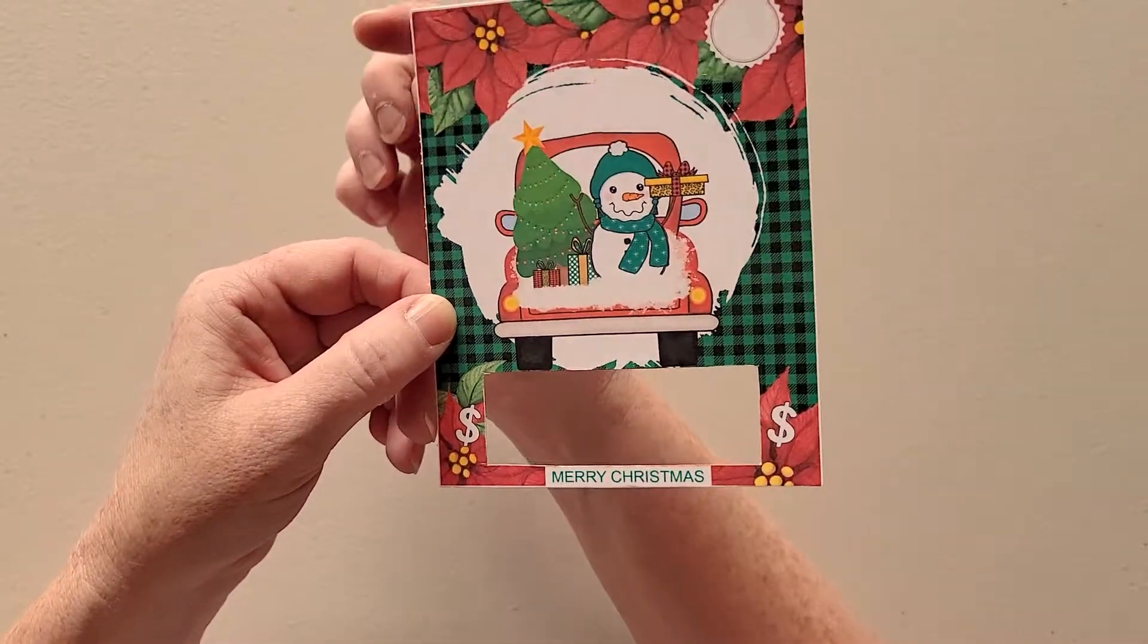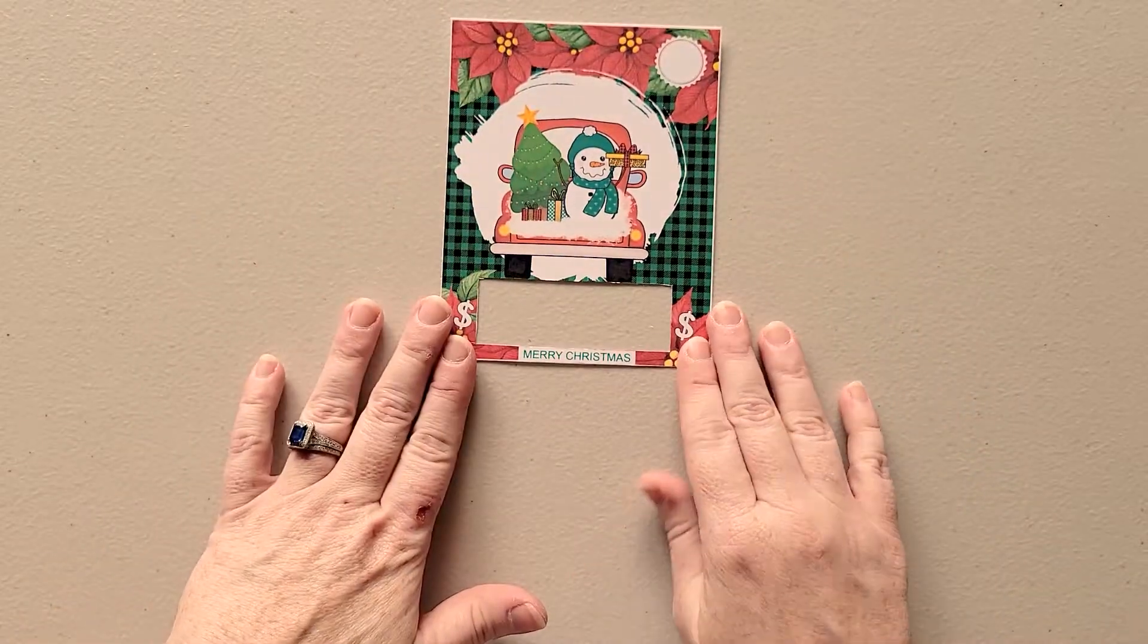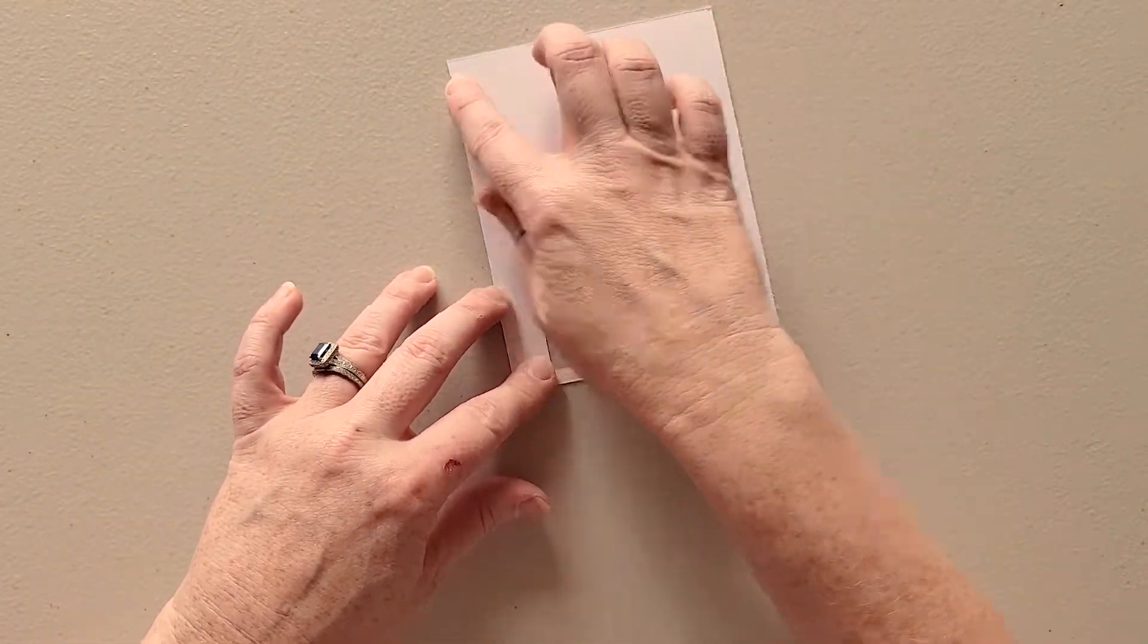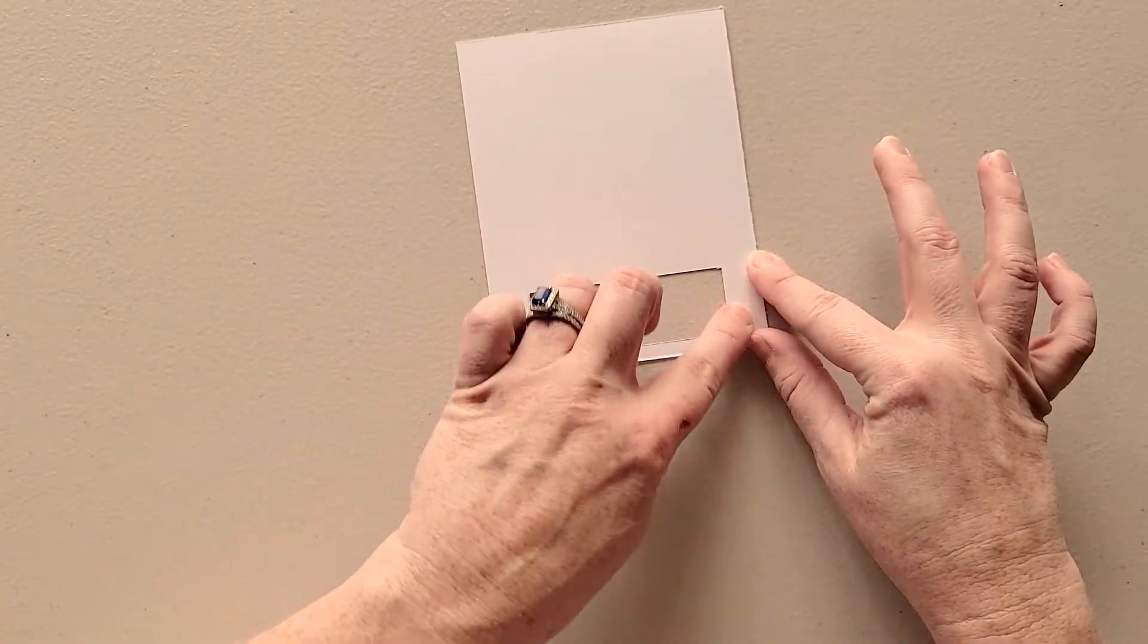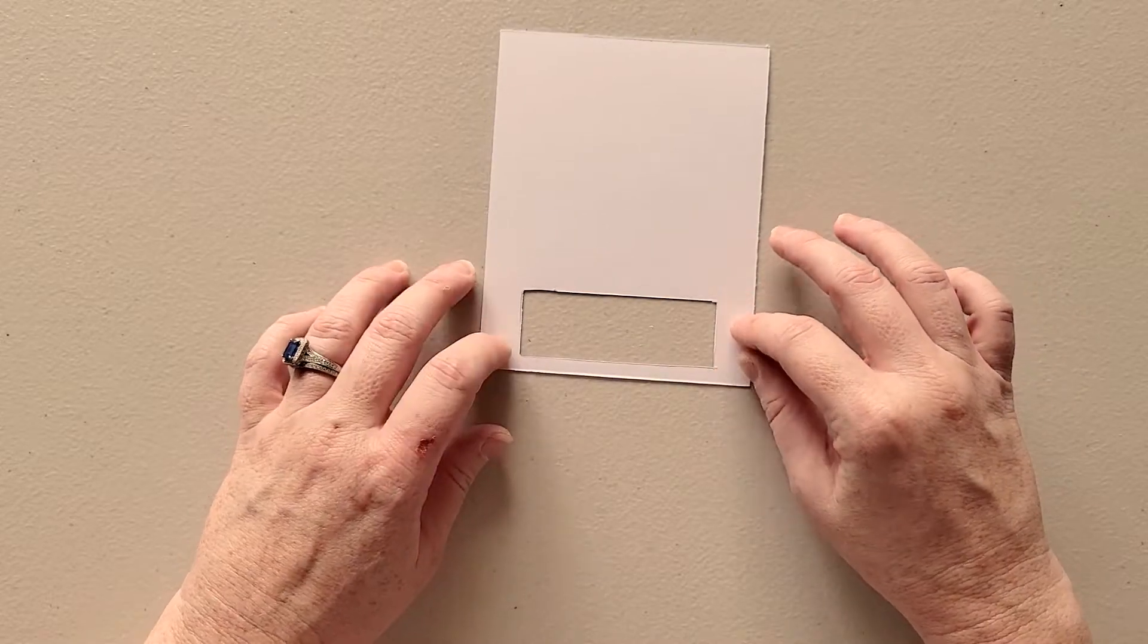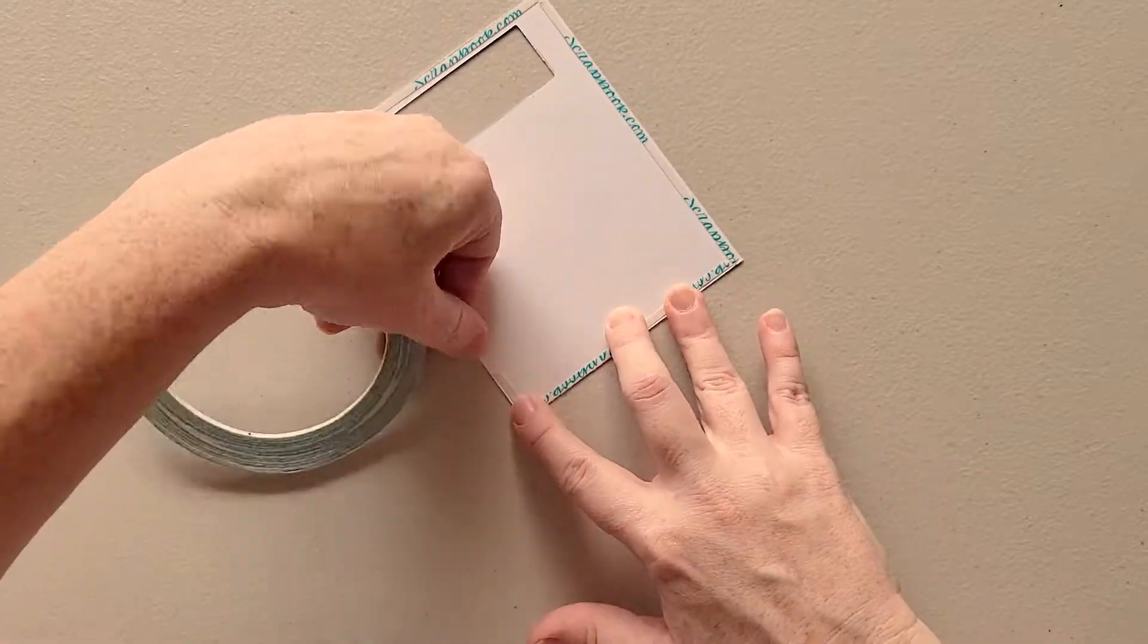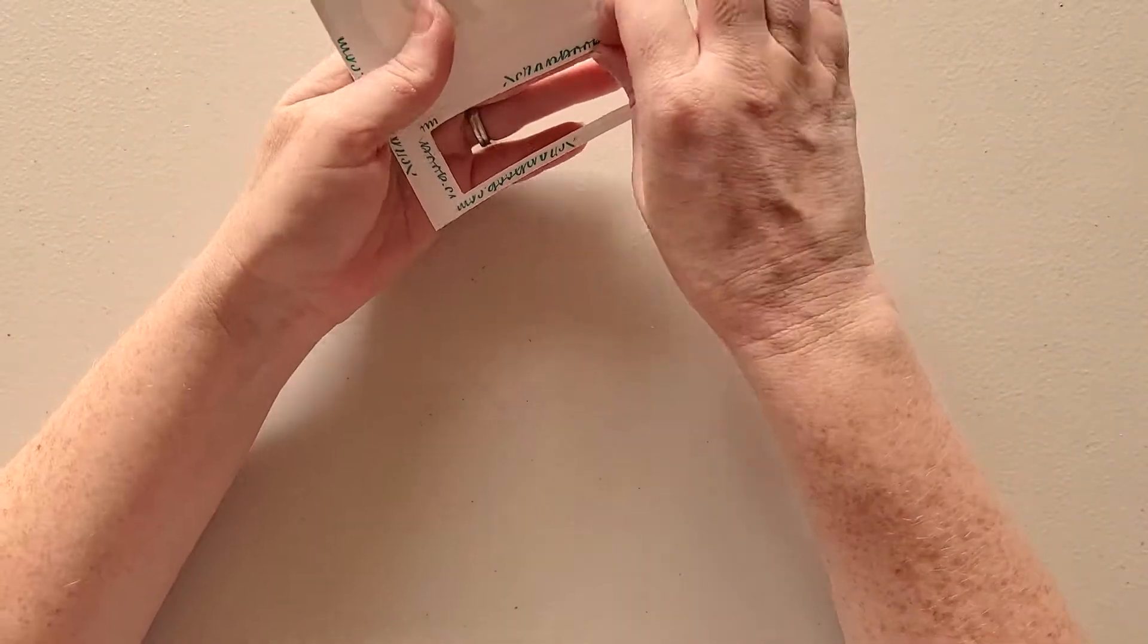After you have removed that space, you'll also want to trim around the card itself. Then what you'll do is flip it to the back and you're going to apply some adhesive around the edges of the outside and then also around this rectangle in the middle too. I'm just going to apply just a thin double-sided adhesive.